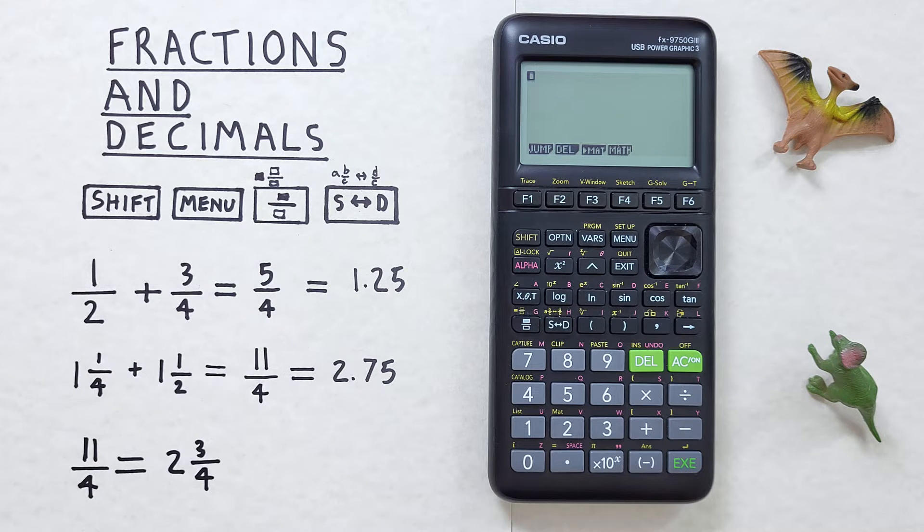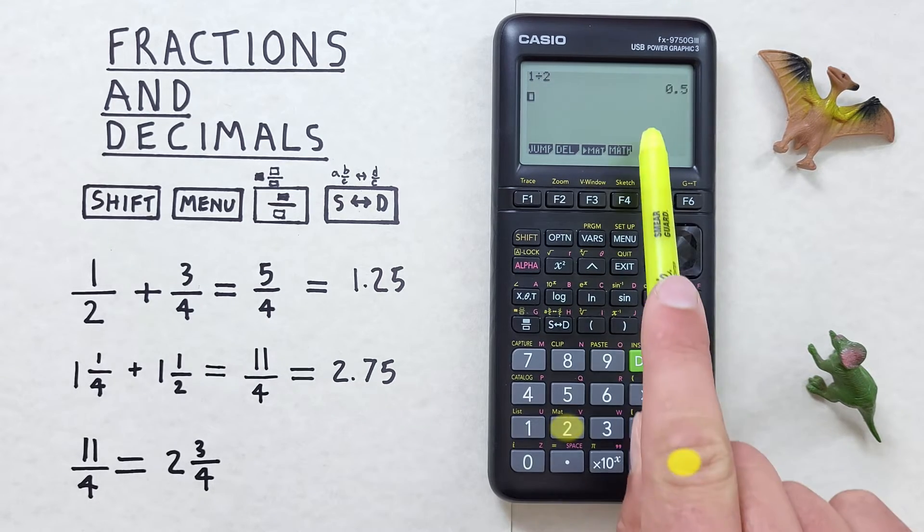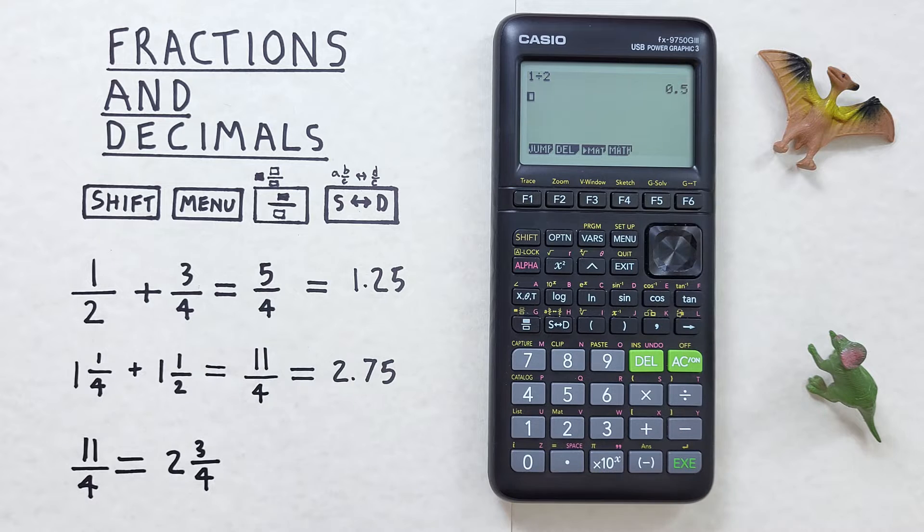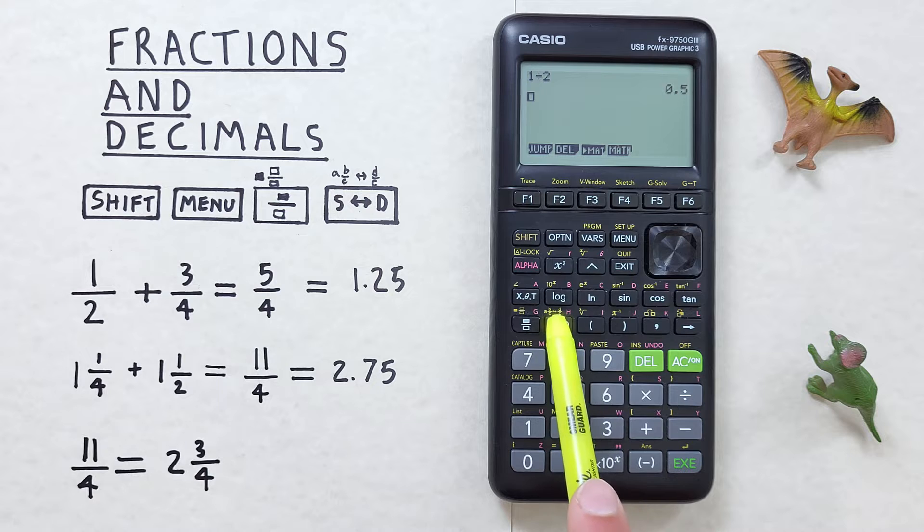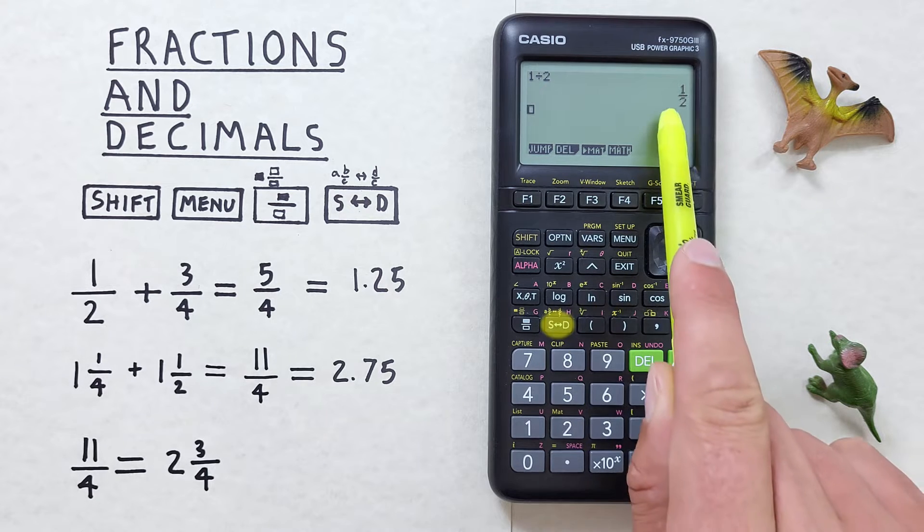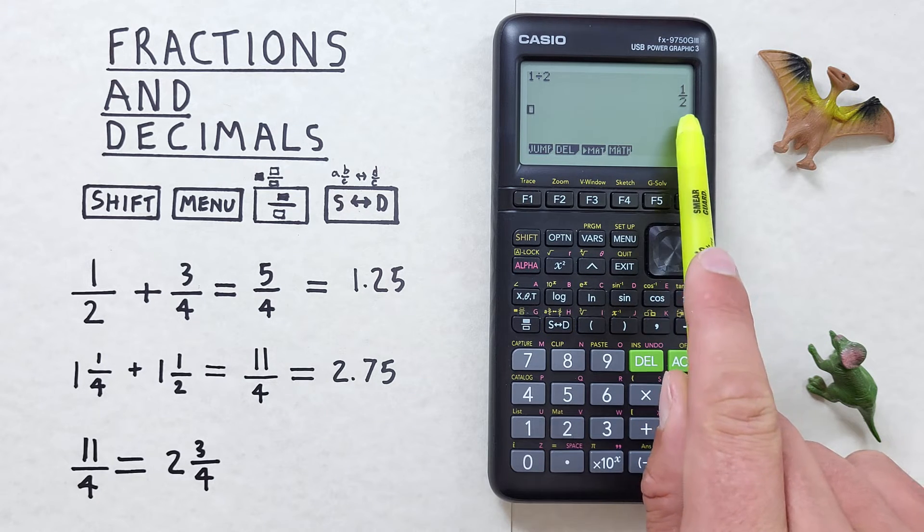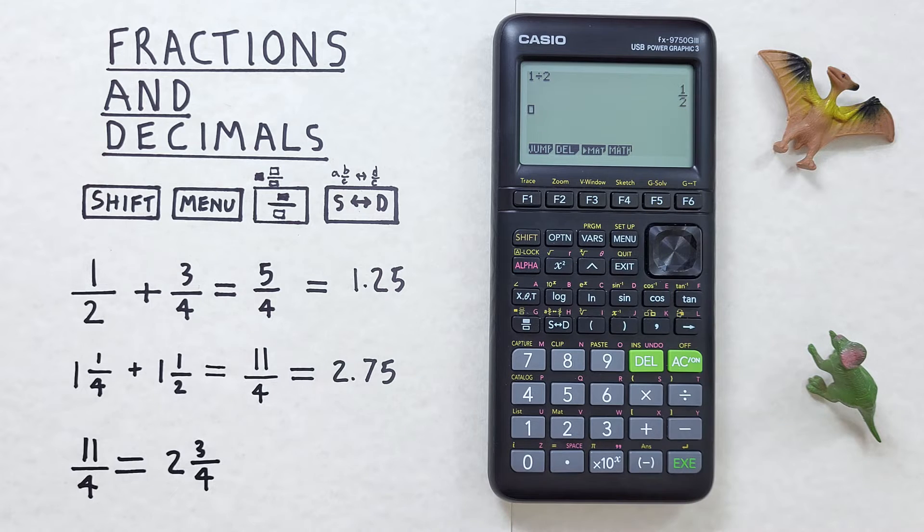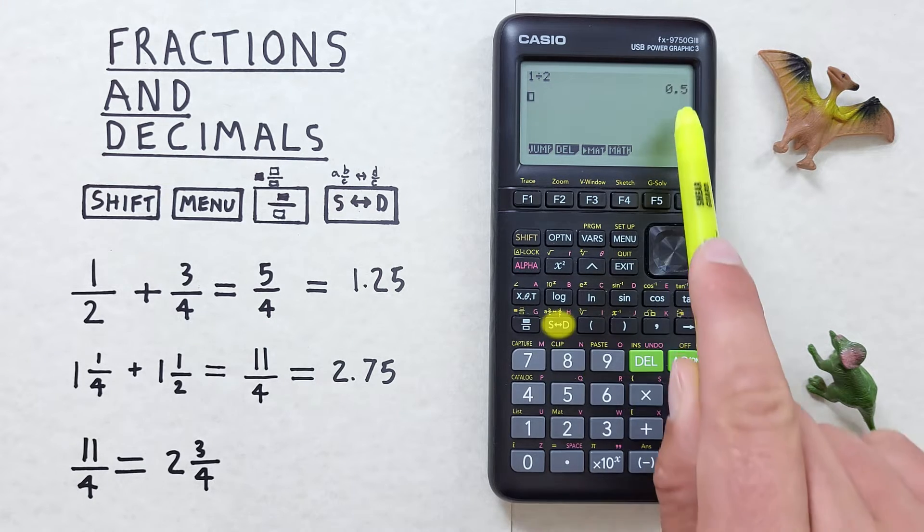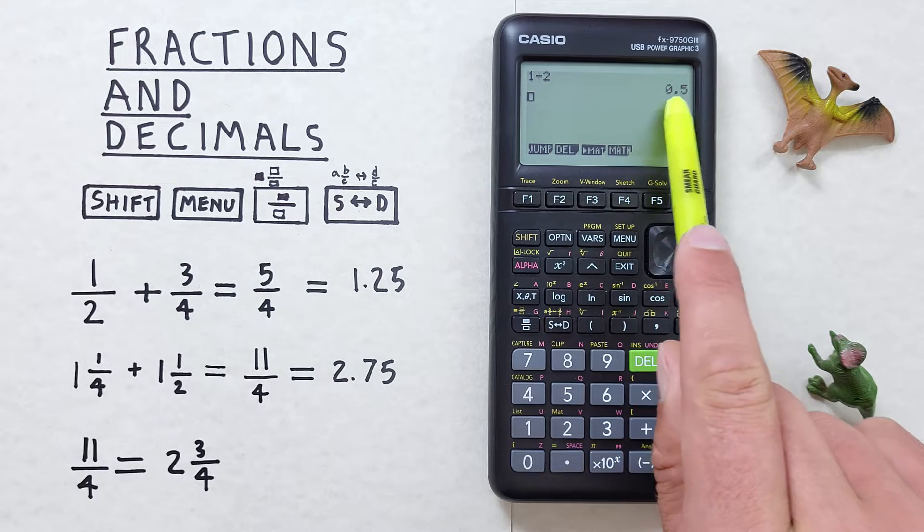When we enter something into this calculator like for example one divided by two, it gives us the results as a decimal. If we want to see that as a fraction we can use the S to D key here. So if we press that we see that 0.5 has changed to 1 over 2 and we can convert back with the same key S to D. There we go, our fraction has changed back to a decimal.